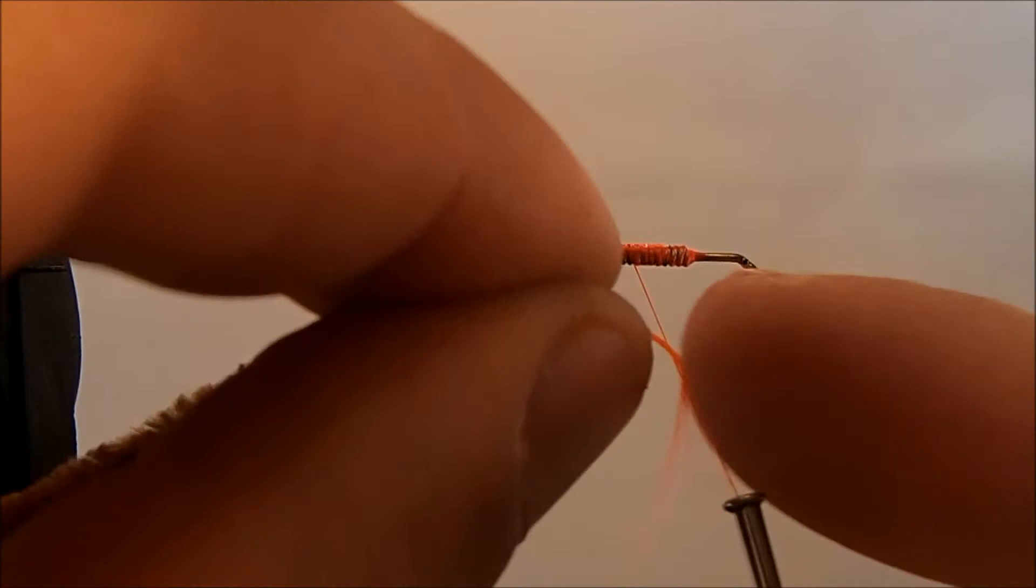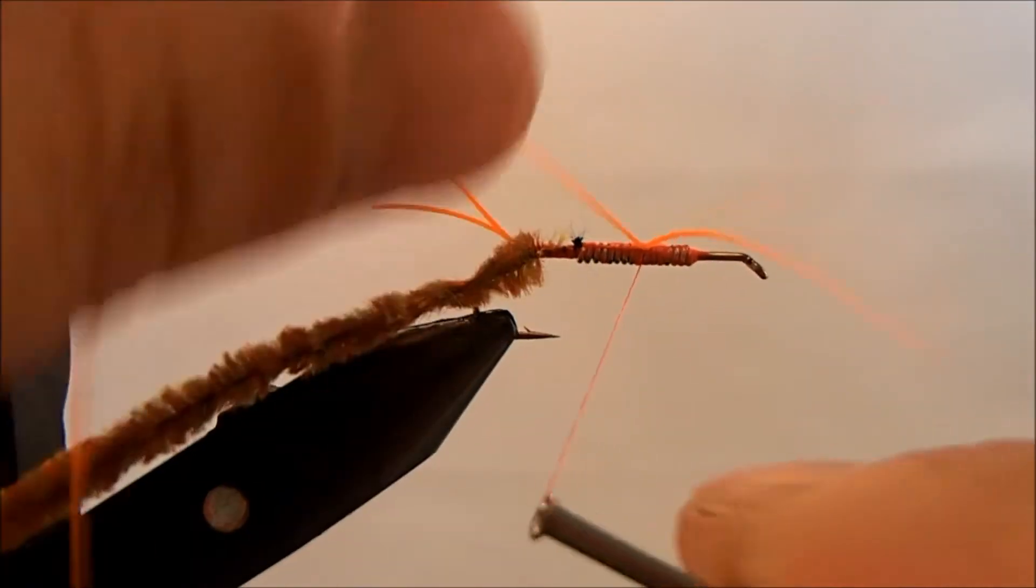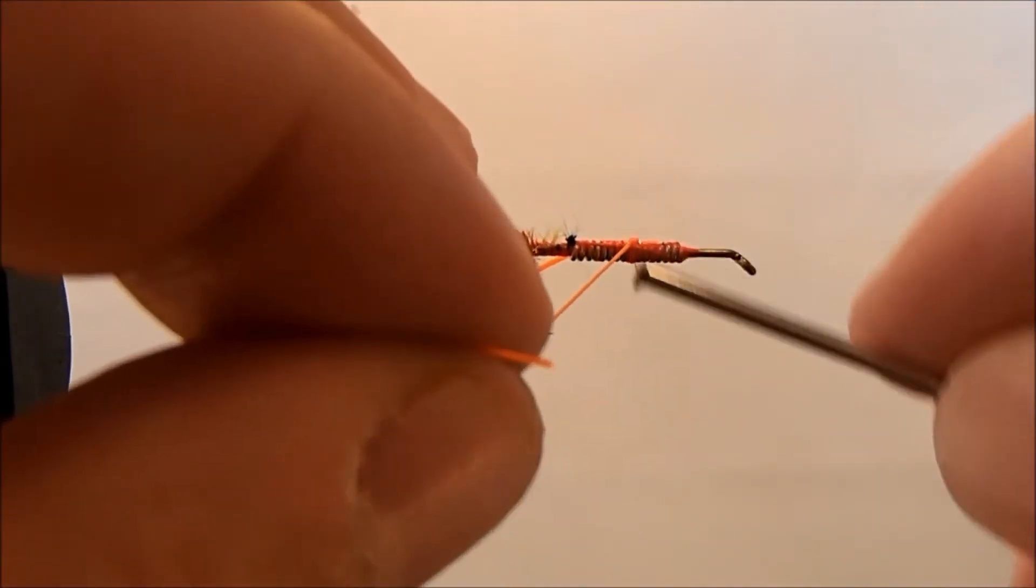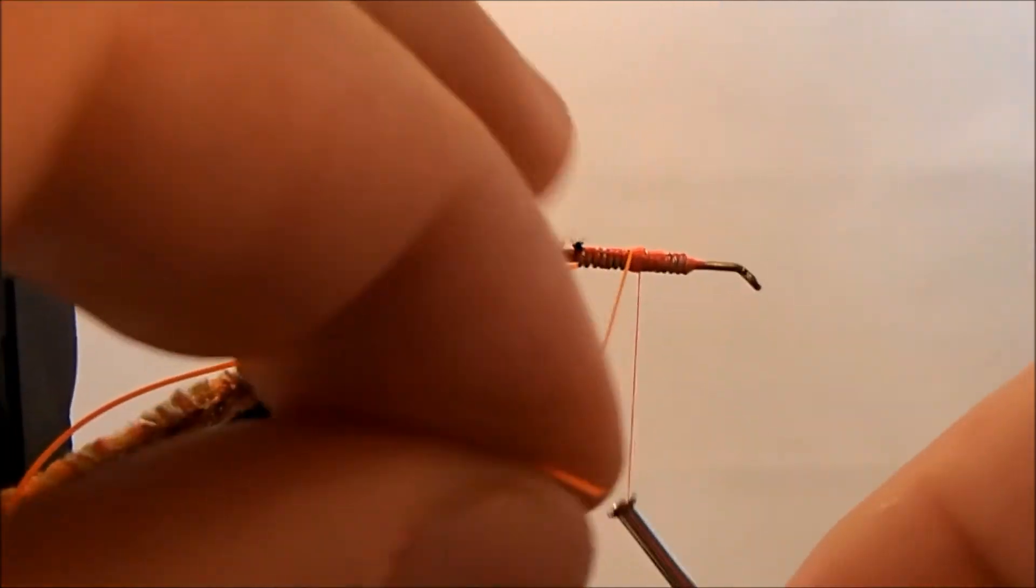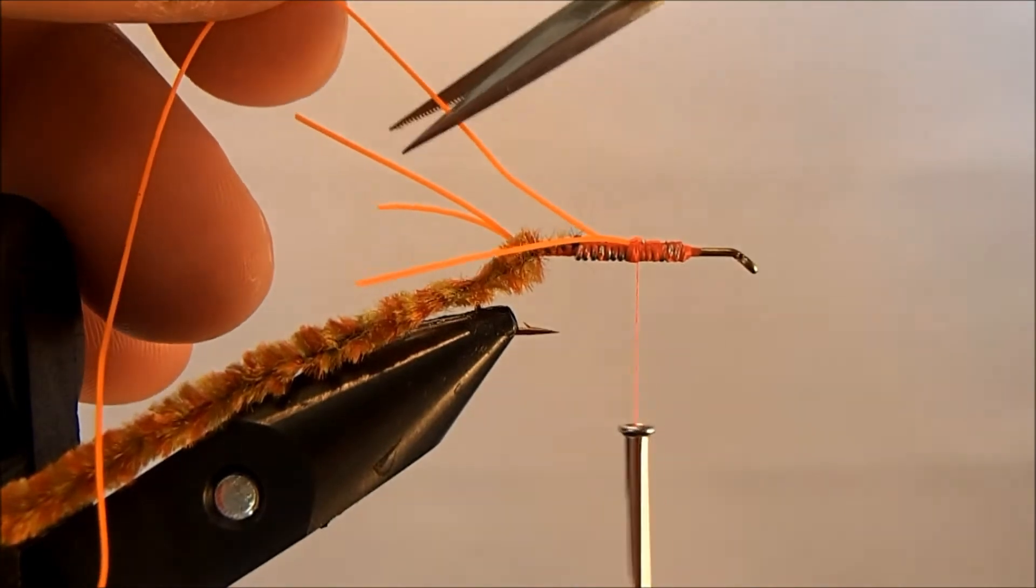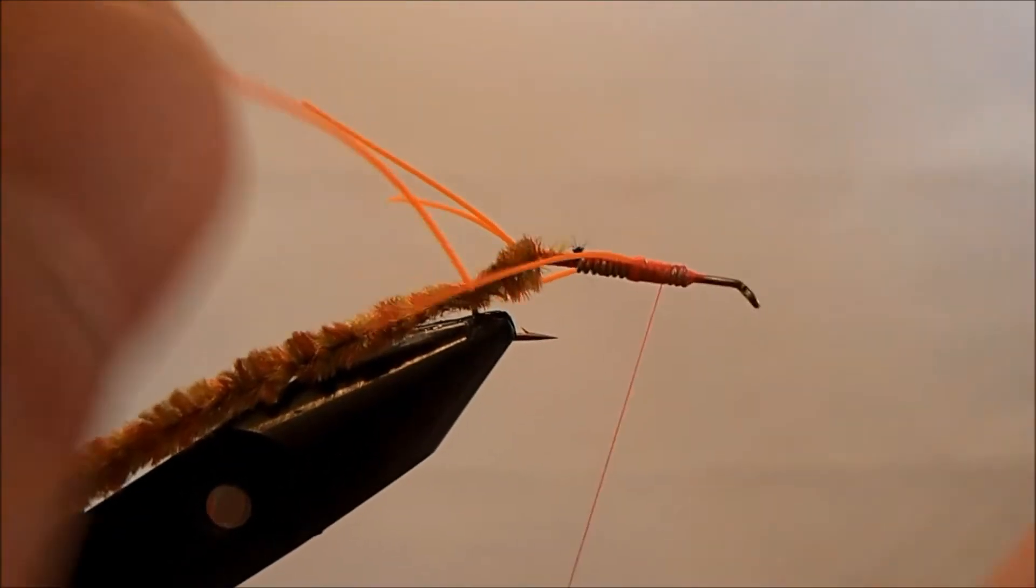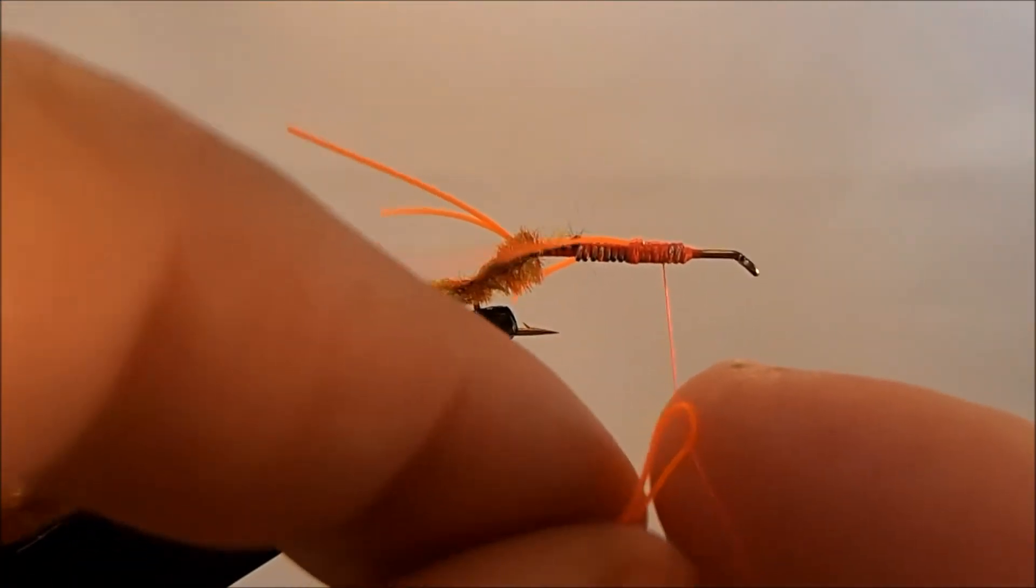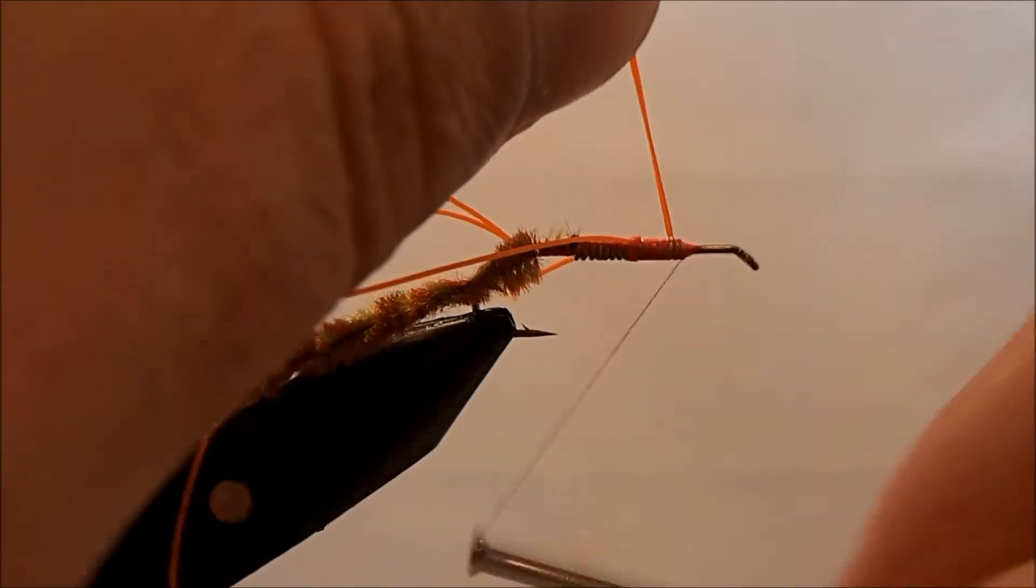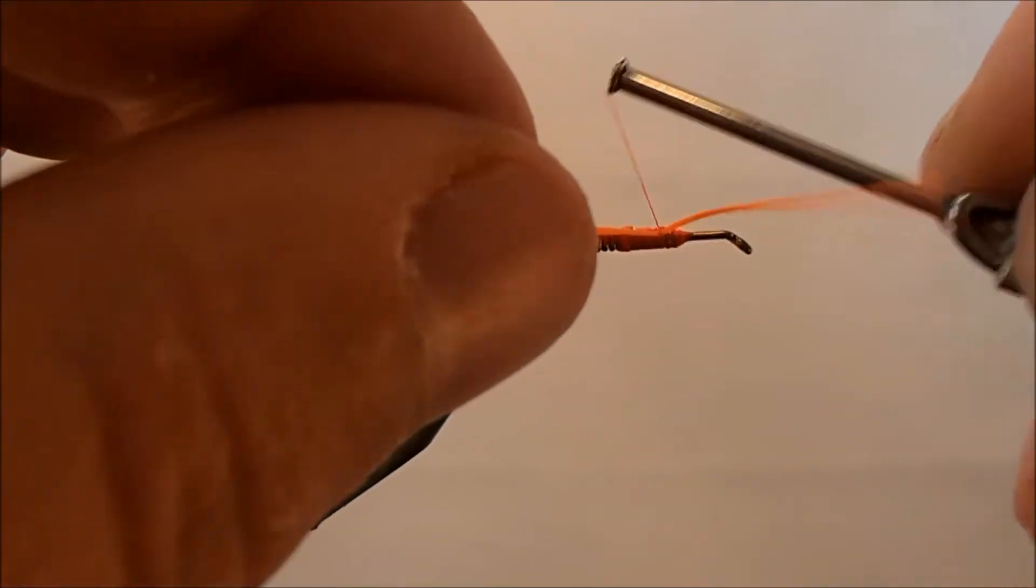I can take that, double it over, and then wrap it back. I'm not going to get too worried about the length of them at this point. We can trim all those things as we go. Then I'm going to move up the body of my fly and tie in this next set.